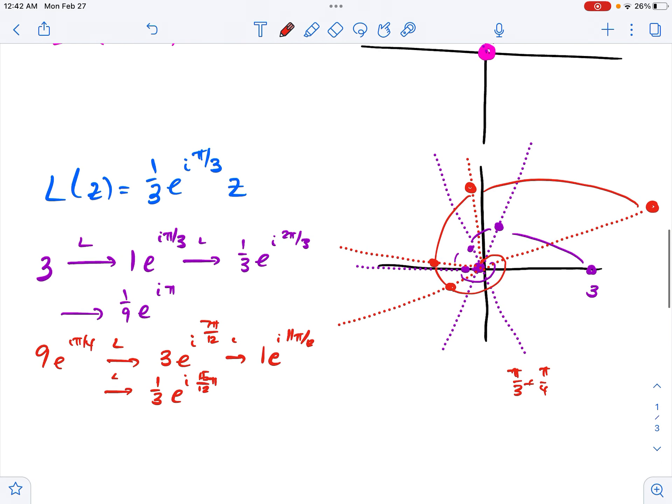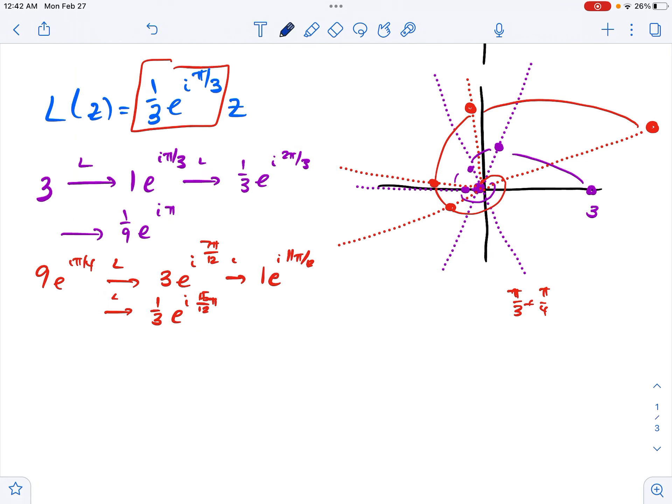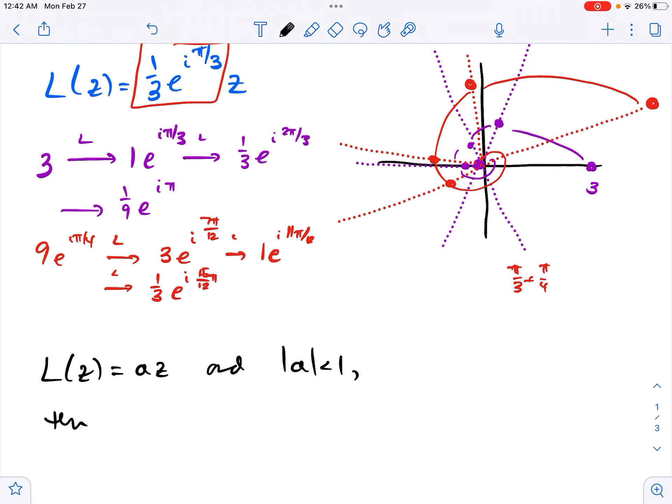So the point of these pictures is that if you have L(z) equals az and the modulus of a is less than 1, then 0 is an attracting point. That is, orbits spiral in to 0.